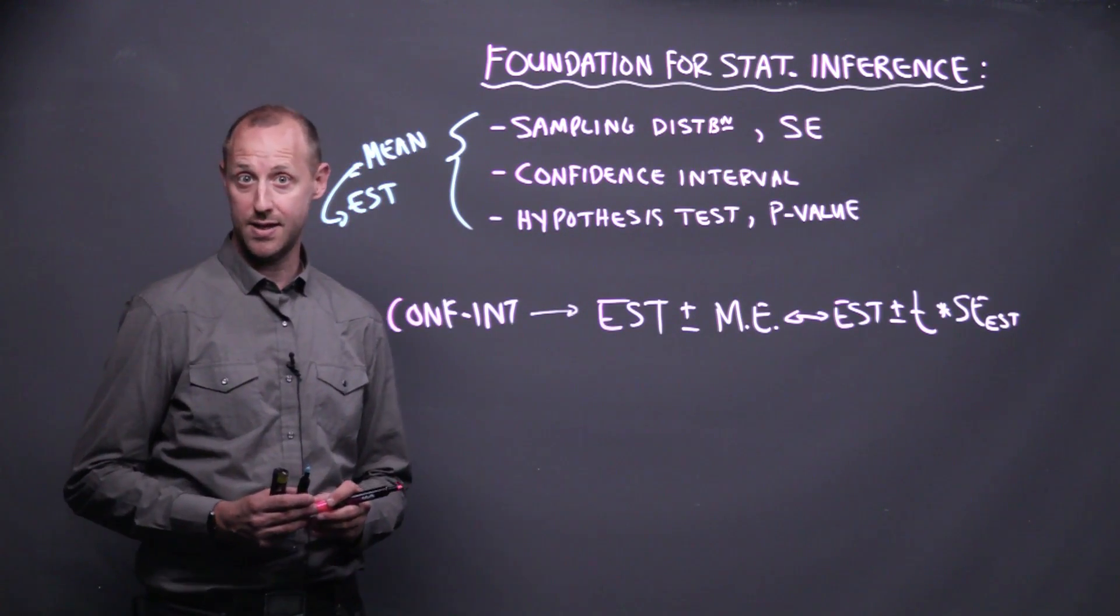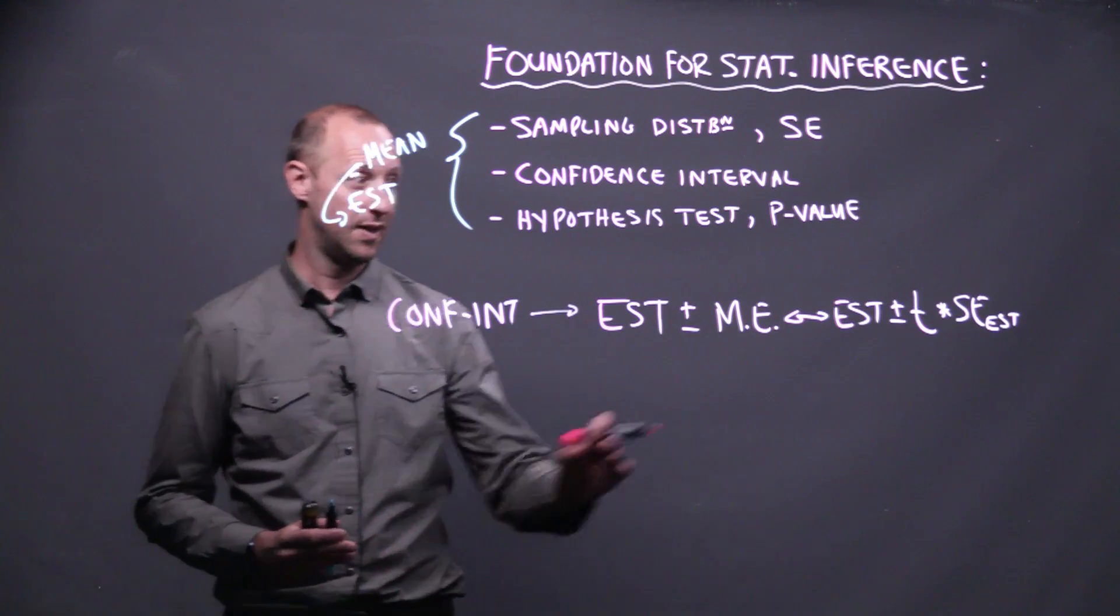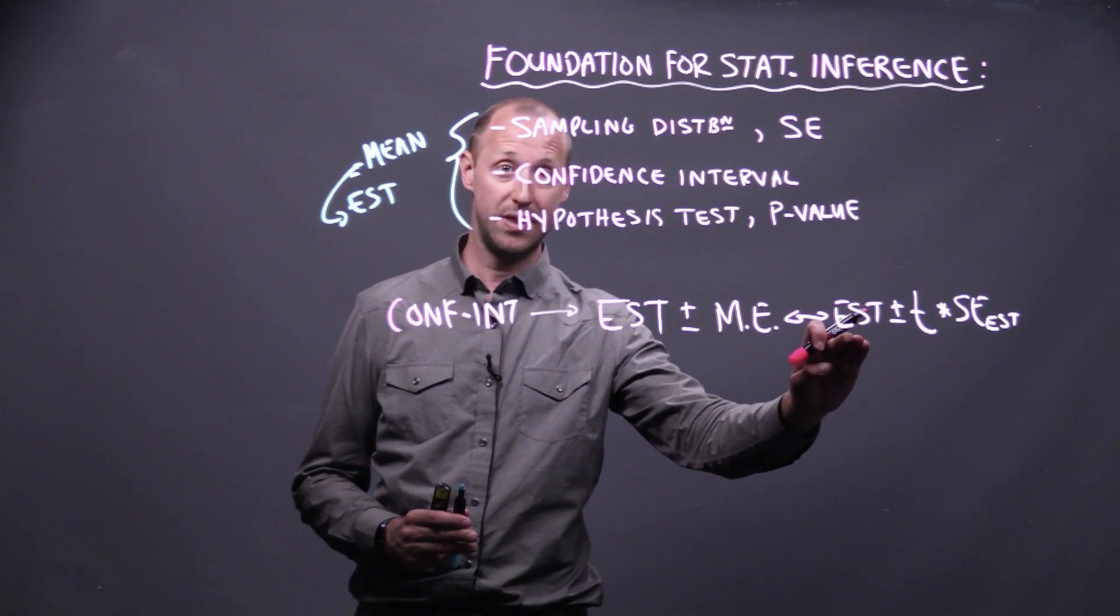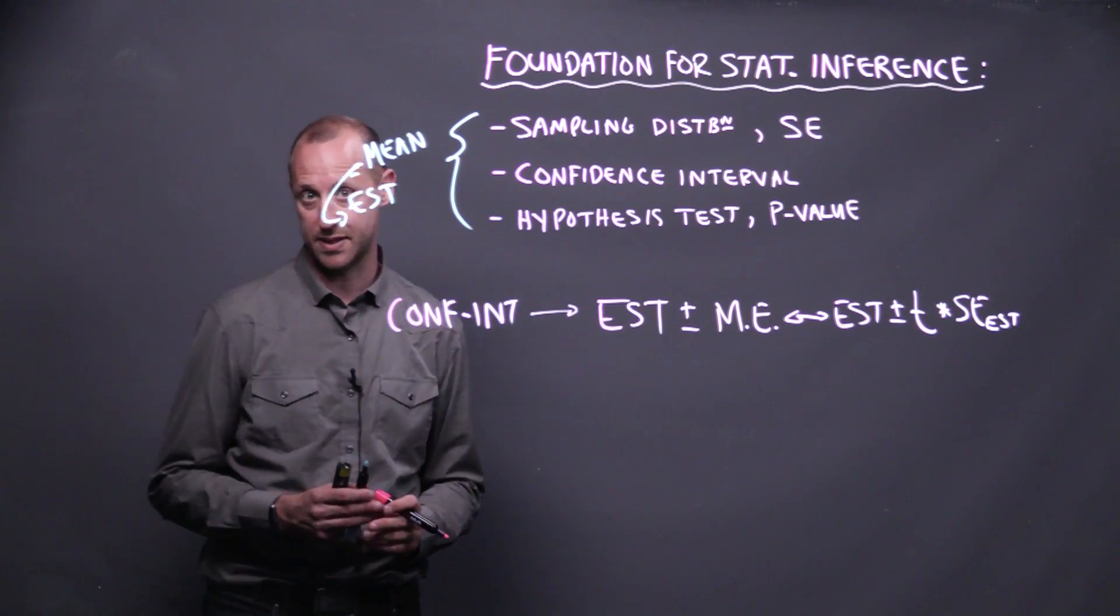The estimate that we're using might change. Rather than looking at a mean, we might estimate a difference in means. And there we can go with the difference in means in our sample, plus or minus t times the standard error for the difference in means.